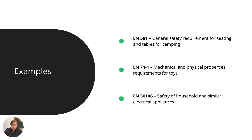This means that in the EU you have hundreds, if not thousands, of different EN standards, and unlike directives, they are highly product-specific. For example, EN 581 covers general safety requirements for seating and tables for camping — that's very specific. Second, EN 71-1 covers mechanical and physical properties requirements for toys, concerning things like sharp points and small parts, which directly impacts how you would design a toy product.